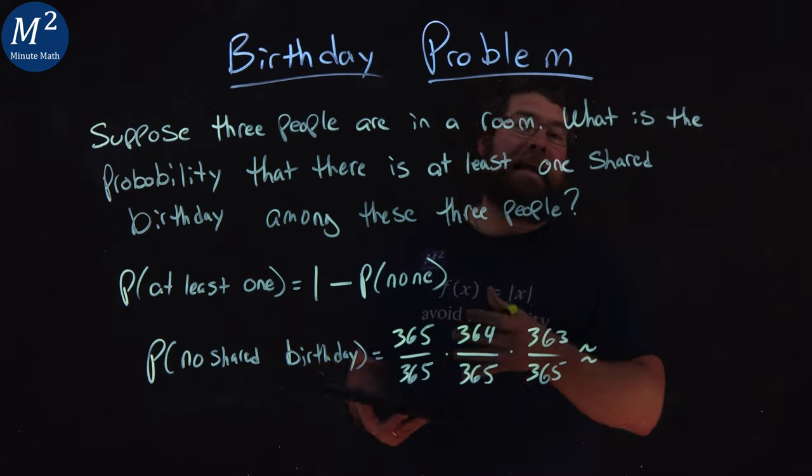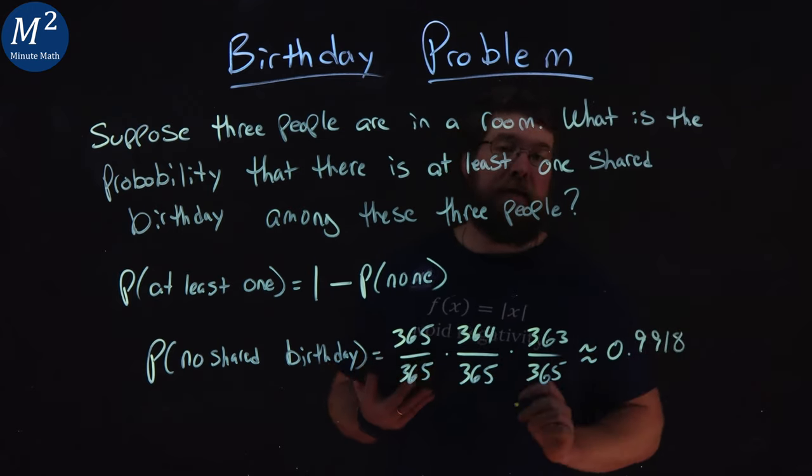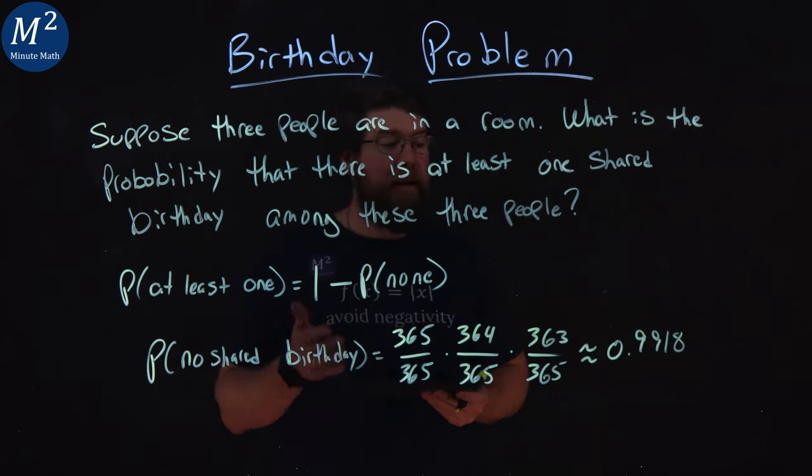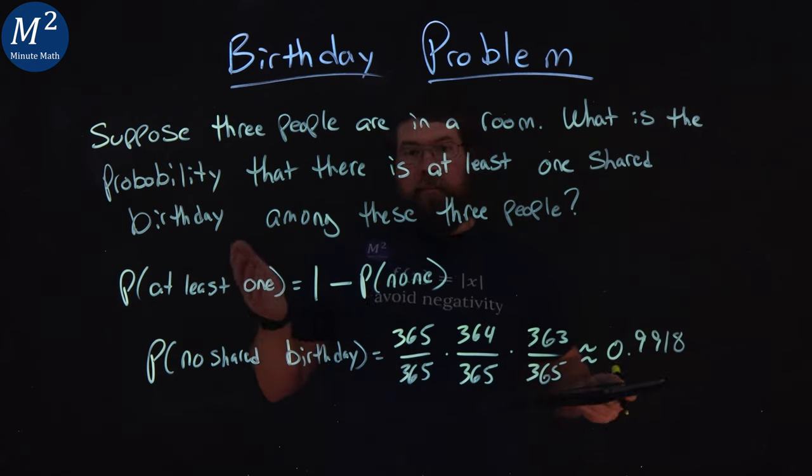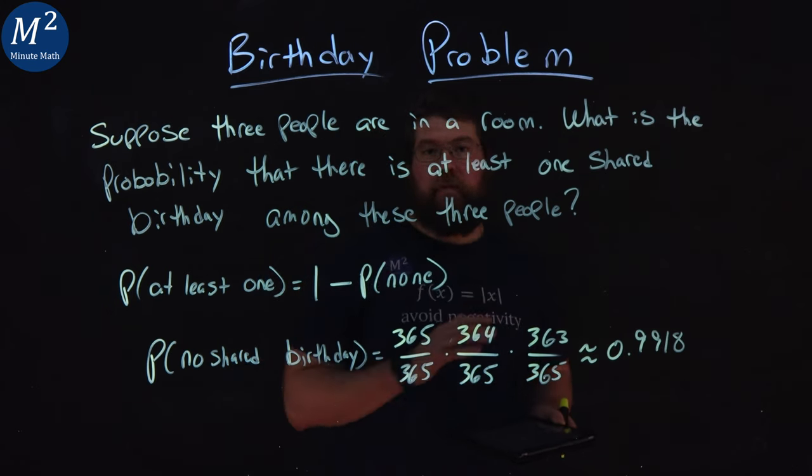If we multiply this out, we get a decimal of 0.9918. So there's a 0.9918 probability that in this room of three people, there are no shared birthdays.